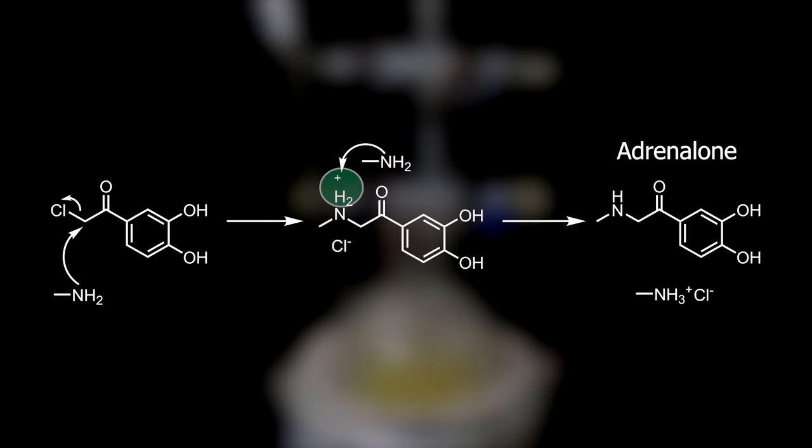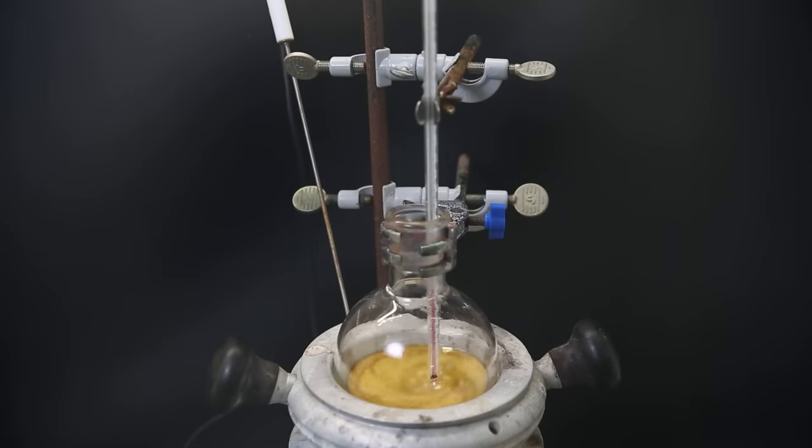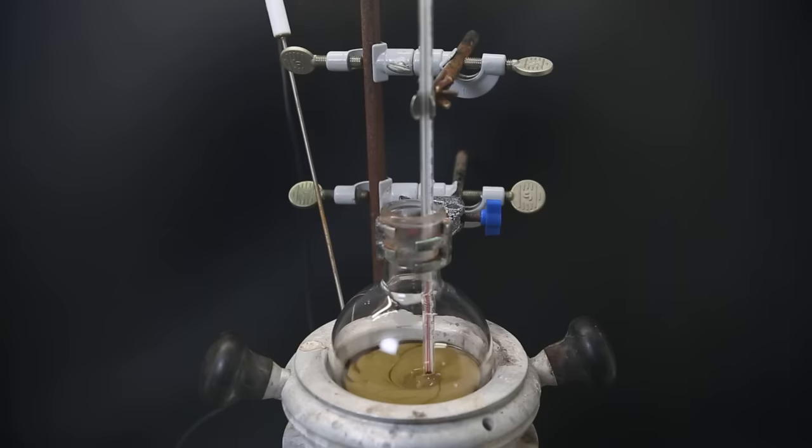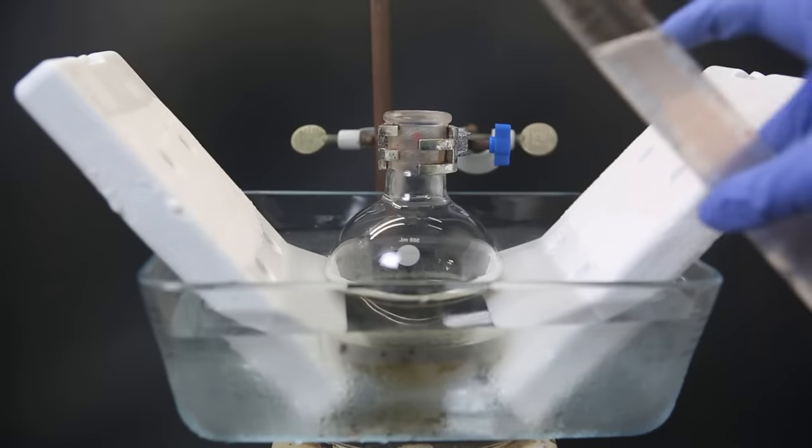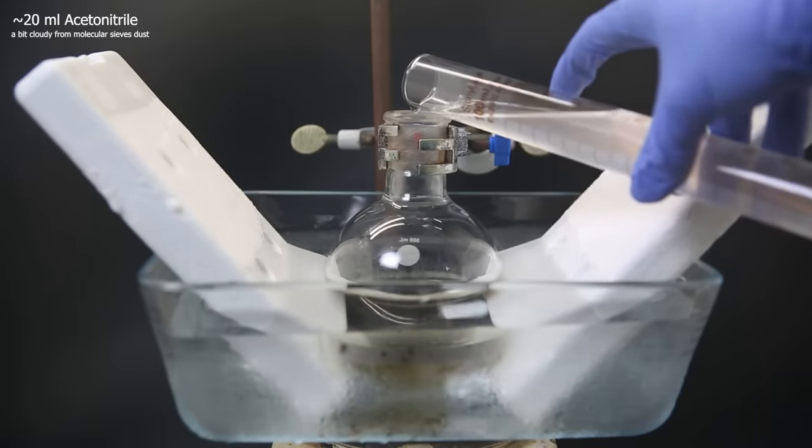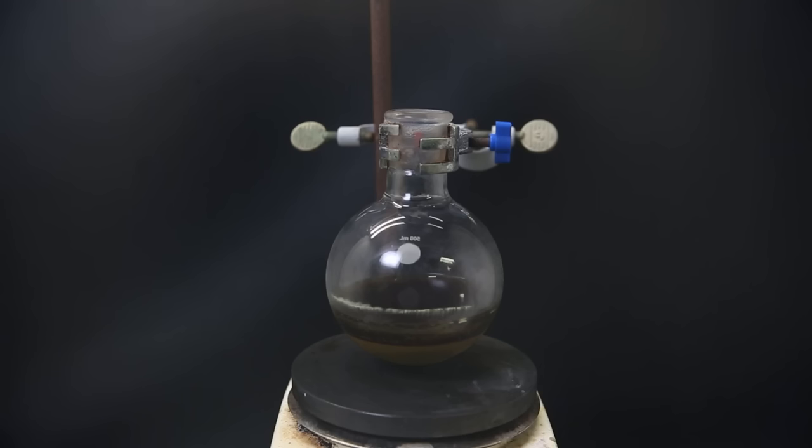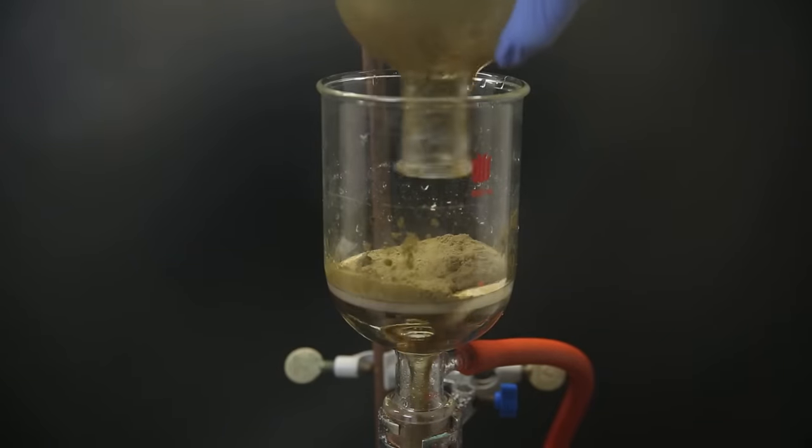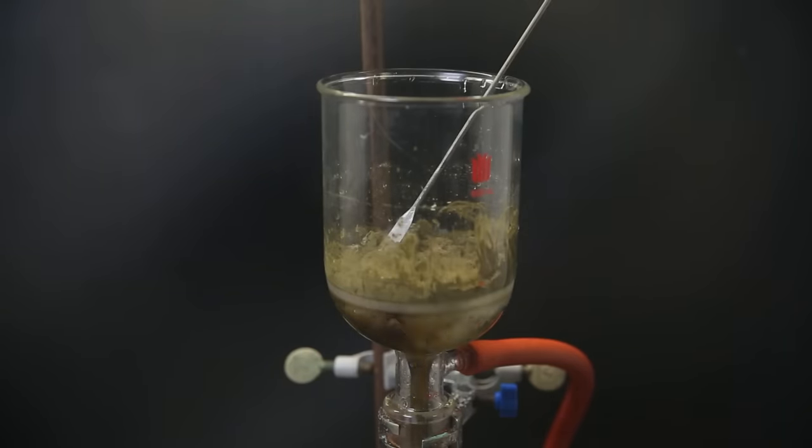At first the reaction was green, and after a while it became yellow, and in the end it was brown. I then move it to an ice water bath again to cool it down to a bit below room temperature and add in some more acetonitrile. Since the product is insoluble in acetonitrile, I then vacuum filter the mixture through a glass frit with a filter paper on top and wash it with some more acetonitrile.